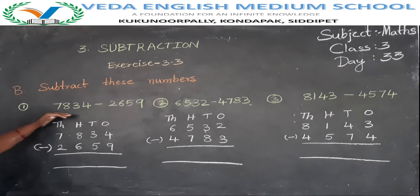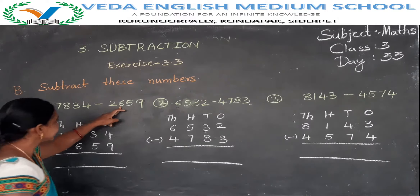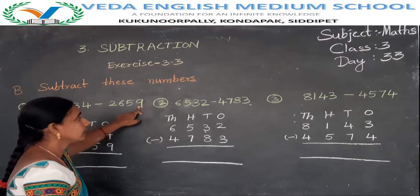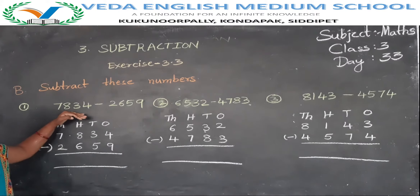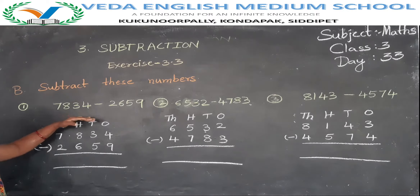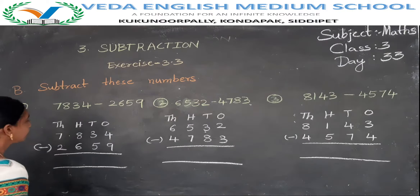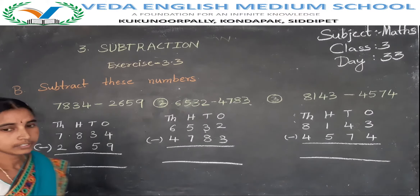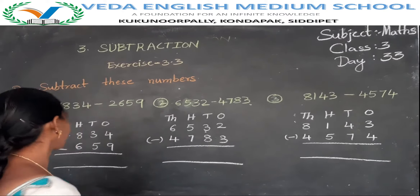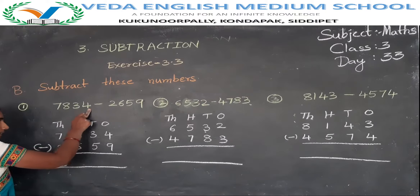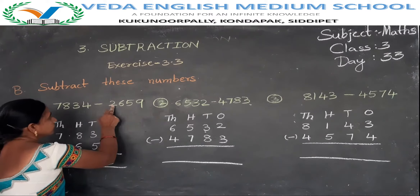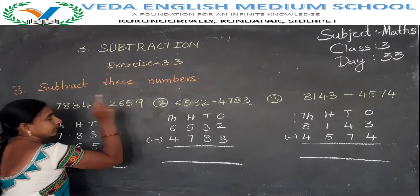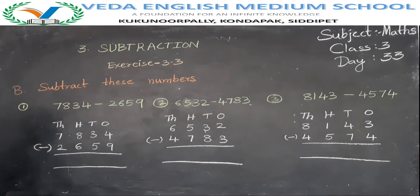Some problems are given like this: 7834 minus 2659. These are given in horizontal format. But we do not write them horizontally — we do the subtraction in vertical format. Okay, the first problem. Write it like this.